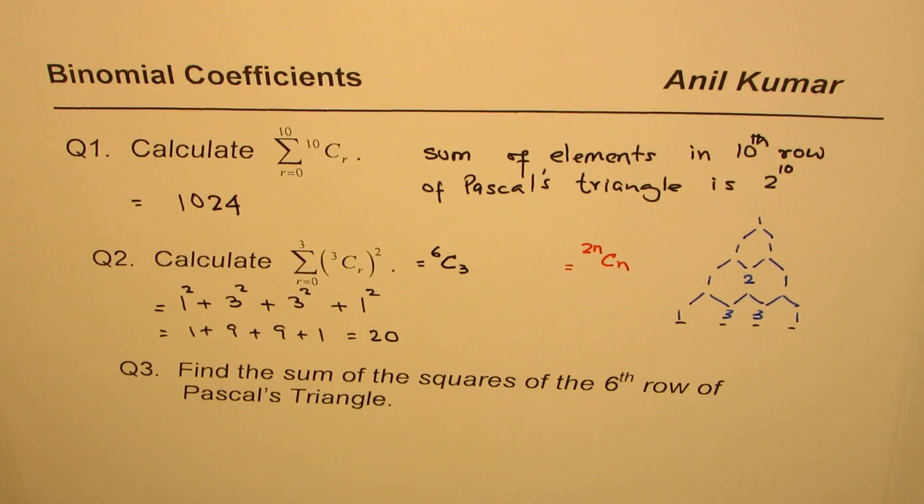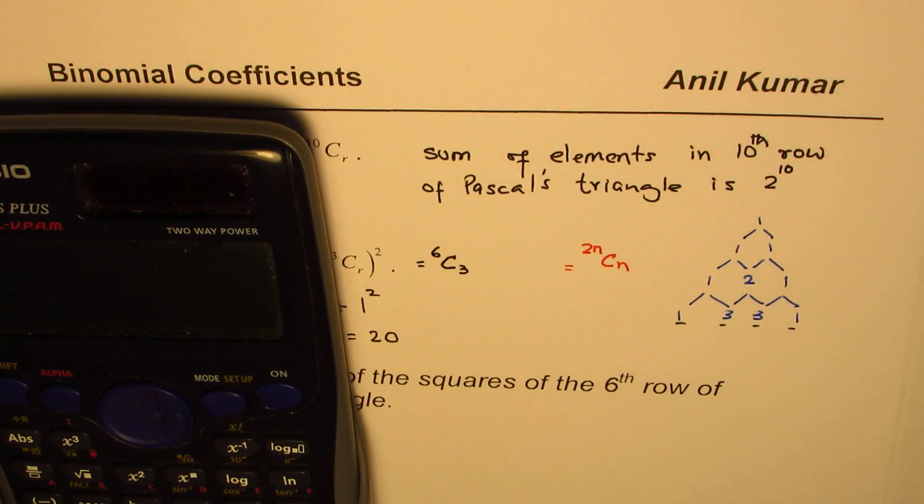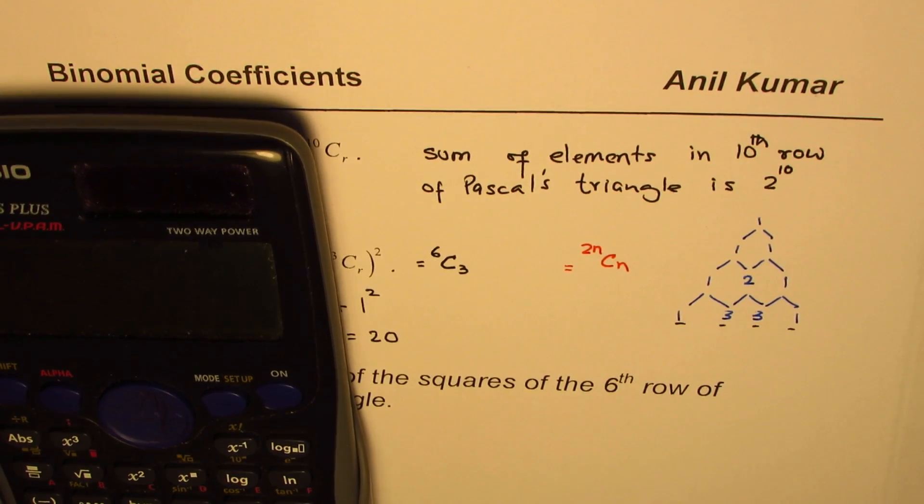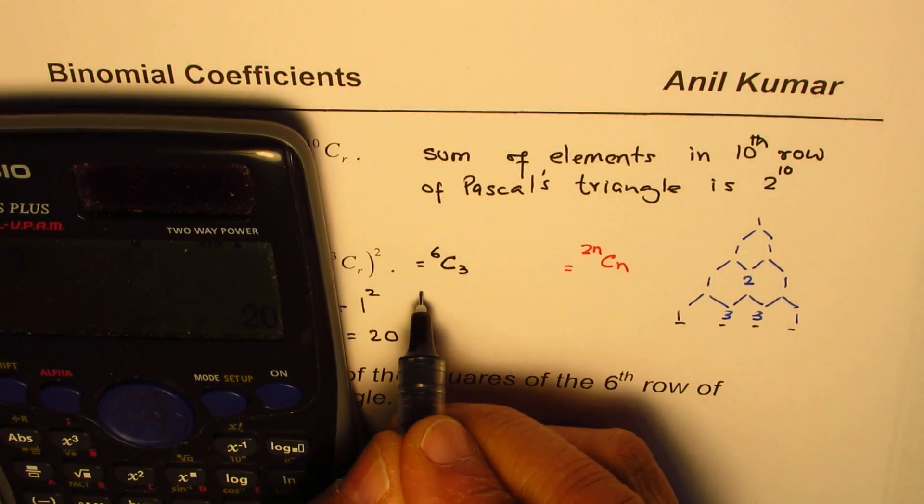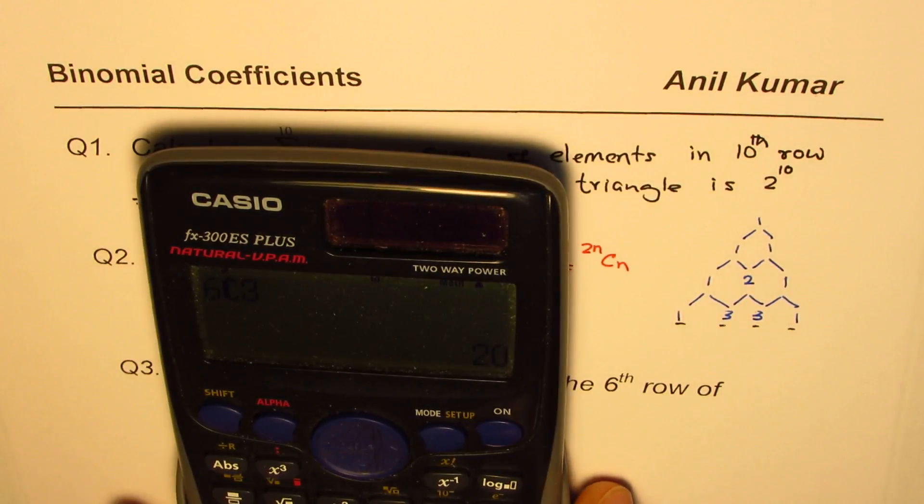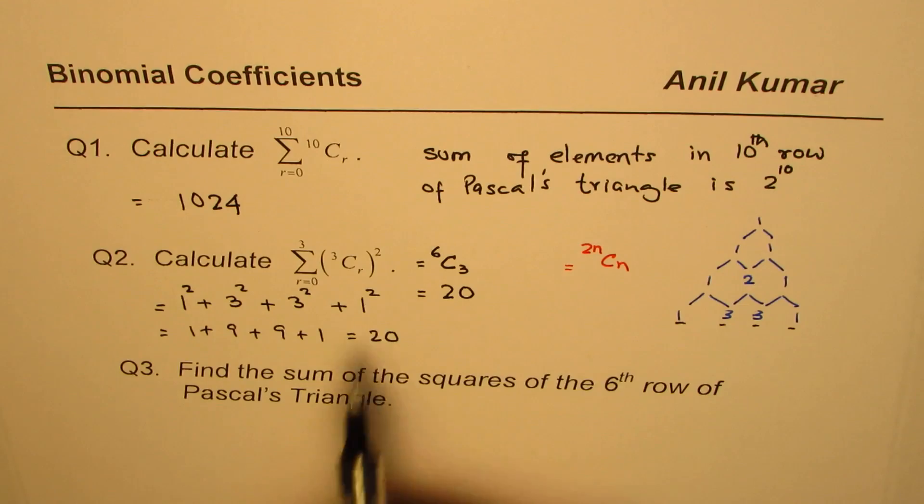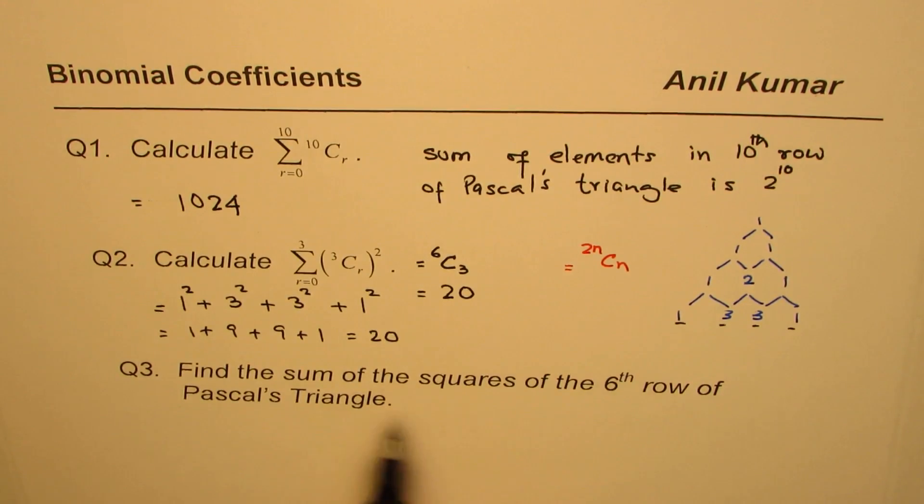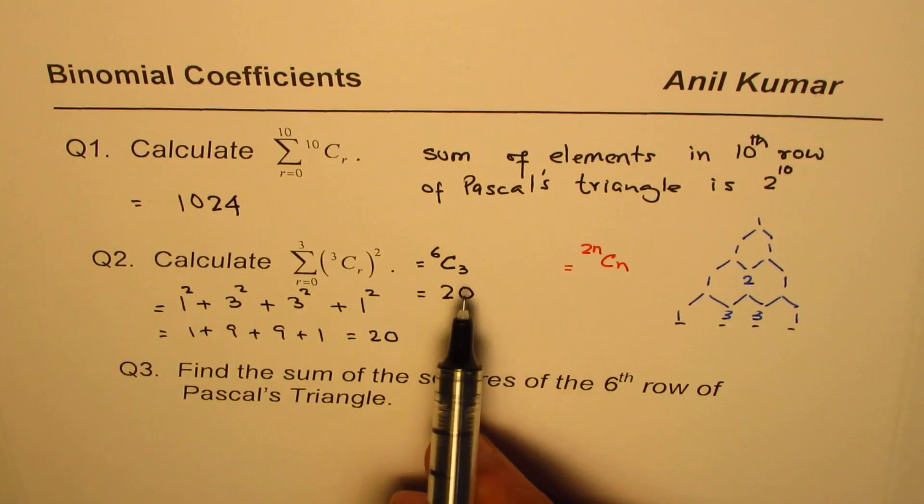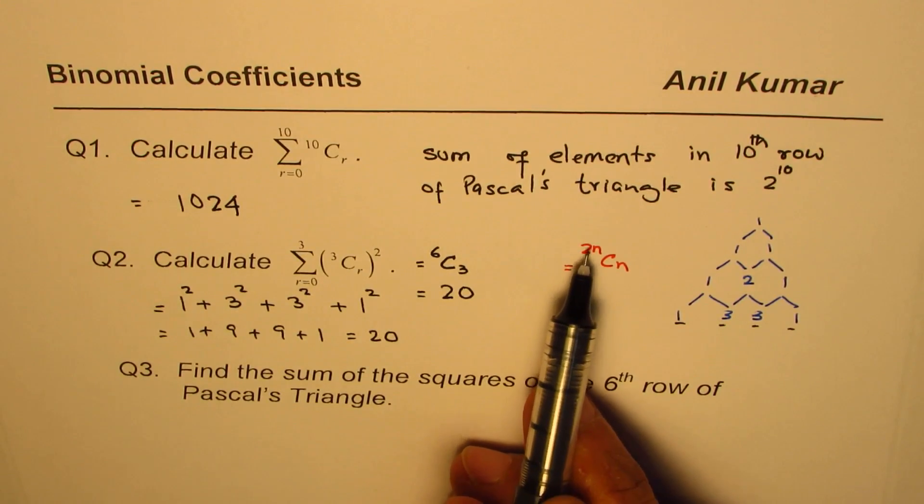So let me use the calculator and figure it out just to verify the formula. So we have 6c3 as our answer, so 6ncrs3 equals to, gives us 20. Do you see that? So that is also equals to 20. So 6c3, as you can see, is 20. So we can always use this formula that the sum of squares of any row in Pascal's triangle can be found by the formula 2n choose n.